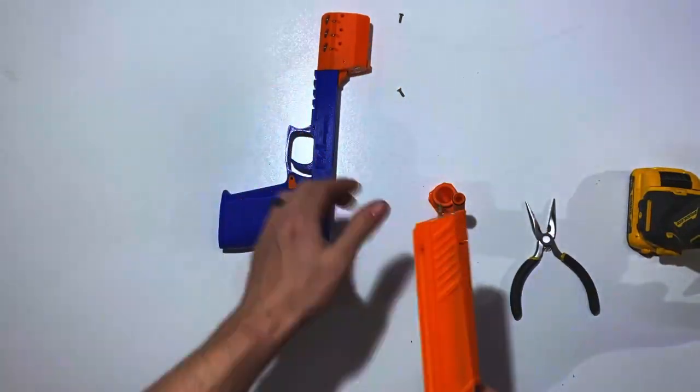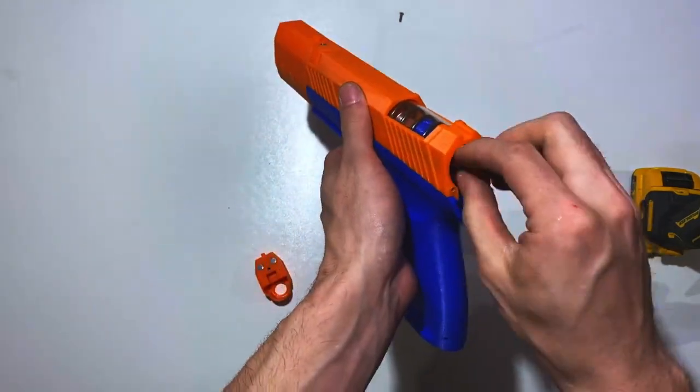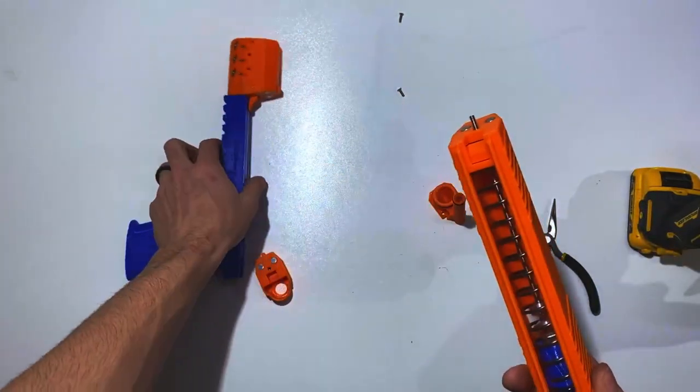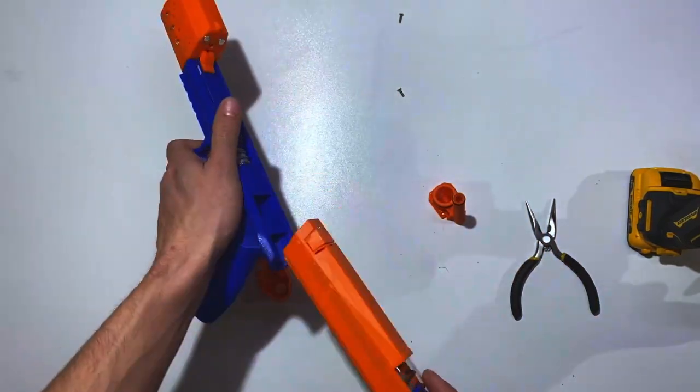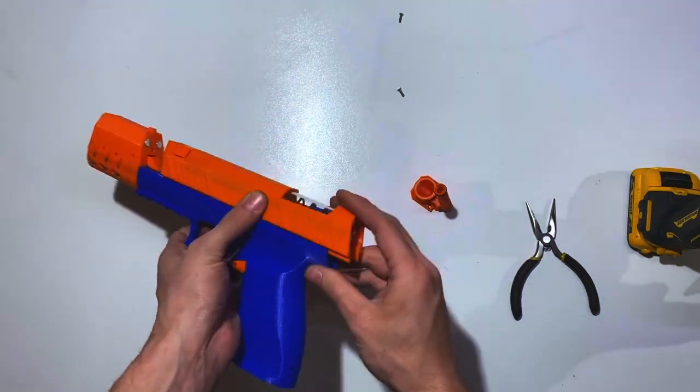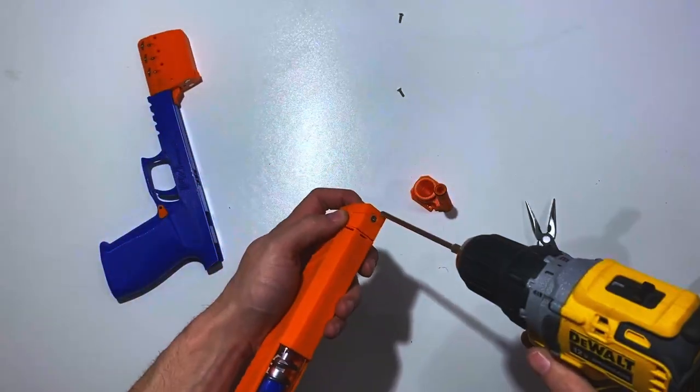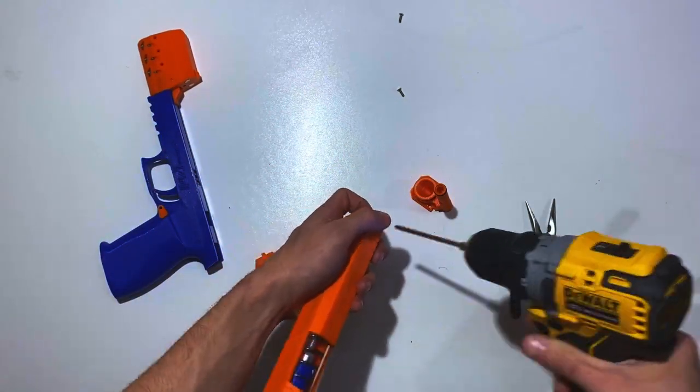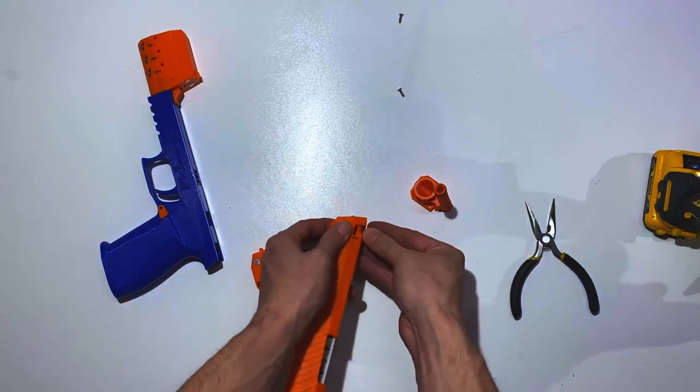You can also do this with the blaster unprimed, by just unscrewing that rod and then sliding it out. Whichever way works for you. I'd recommend doing it that way honestly. So just get the slide off, take off the back cap, unscrew the rod. And we'll take the catch out. We're going to have our catch and our catch springs.